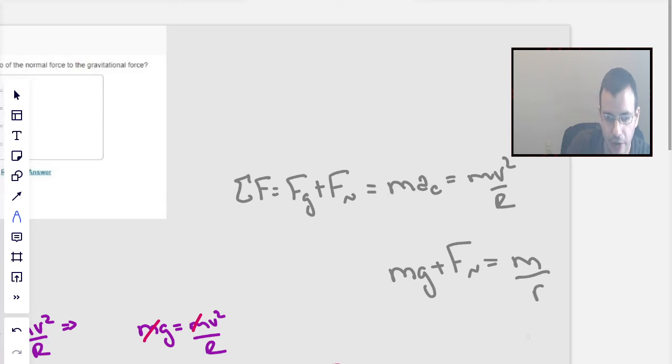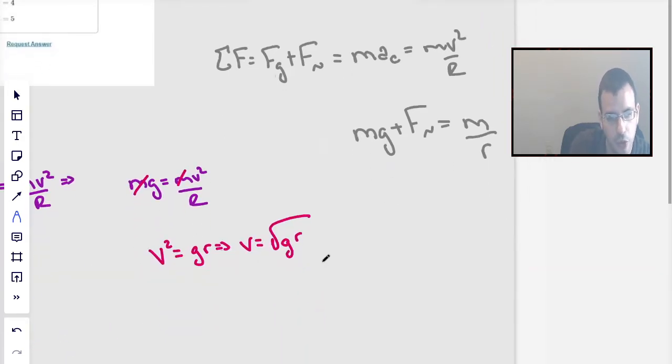We know that this is the critical speed, so doubling that, we have 2v. So this is going to be 2v equals 2 times the square root of gr.